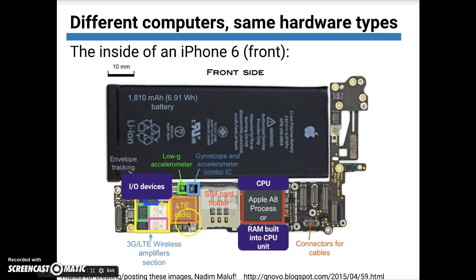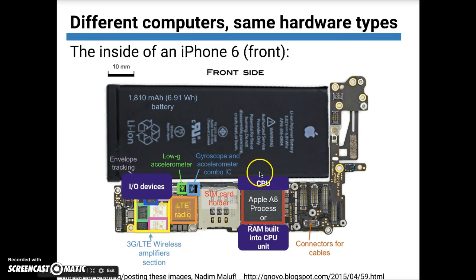The LTE radio is what communicates with the cell towers for your cell provider. So when you have a message to send, the LTE radio is an output device. When you have a message that you're receiving — like you're downloading a YouTube video or receiving a text message — the LTE radio acts as an input device and it sends messages into the CPU so the CPU can deal with them.